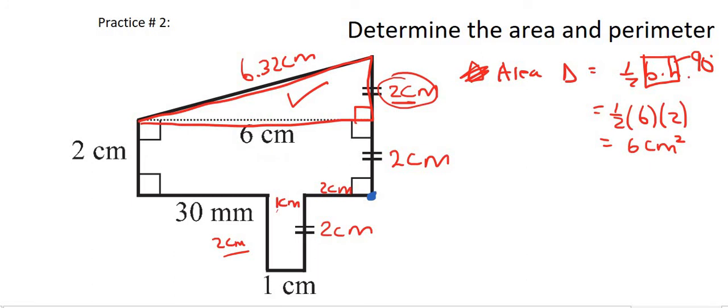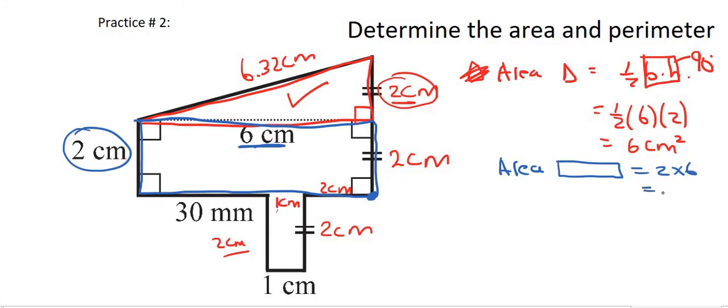And you can do this in any order. It's your decision. I'm now going to do the rectangle. And we know that a rectangle is this length multiplied by this length. And so let me just write that over here. Area of the big rectangle is going to be 2 multiplied by 6. And that's going to be 12 centimeters squared.